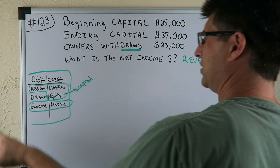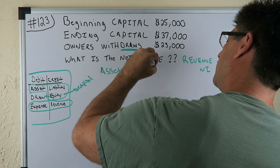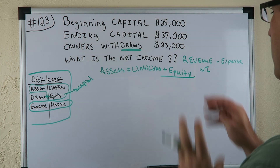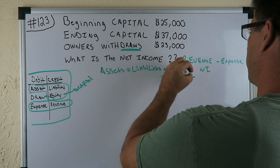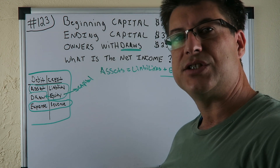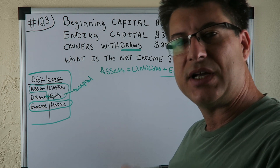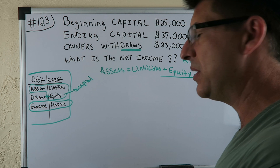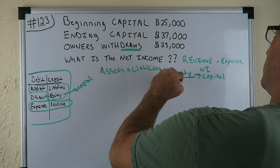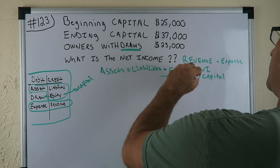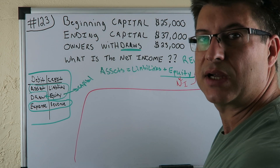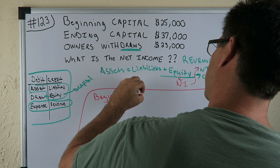From the balance sheet: assets equal liabilities plus equity. Equity or capital — you have a withdrawal reducing equity because you're taking money out of the retained earnings, out of the net income, out of the equity for personal expenses. Net income is inside equity, which is revenue minus expenses — that's how we're gonna find it.